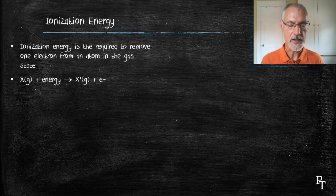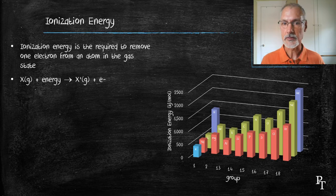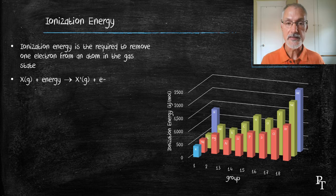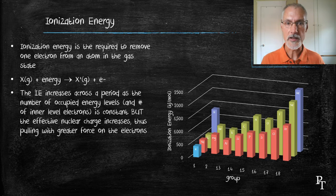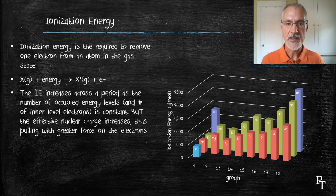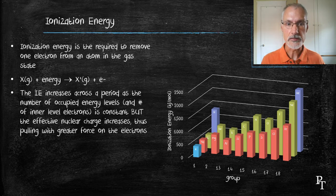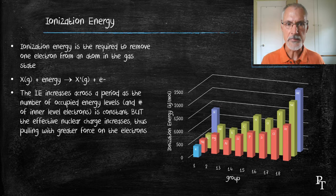Here we can see the trend. First off, moving from left to right across any period, we see an increase in the ionization energy. That indicates there's more effort required to remove an electron. The reason that happens is the effective nuclear charge increases. Let's review what that means.